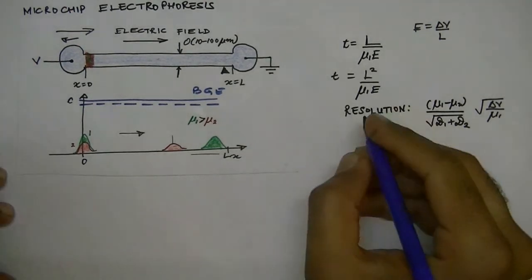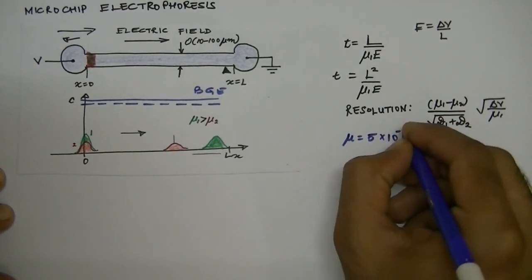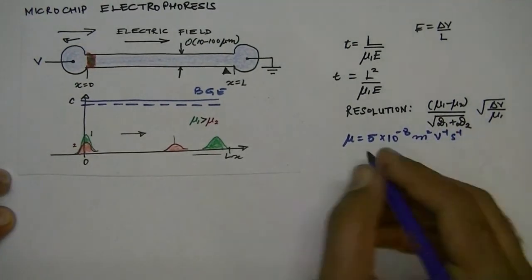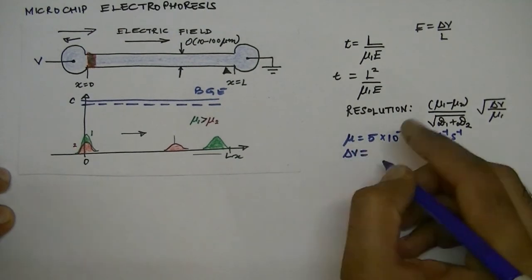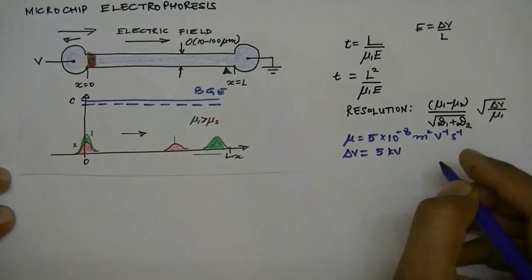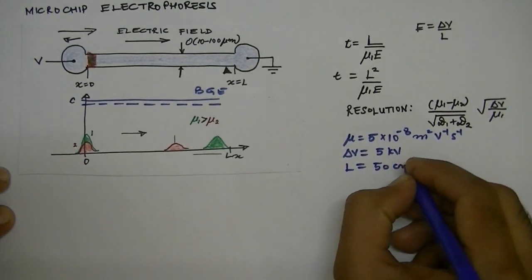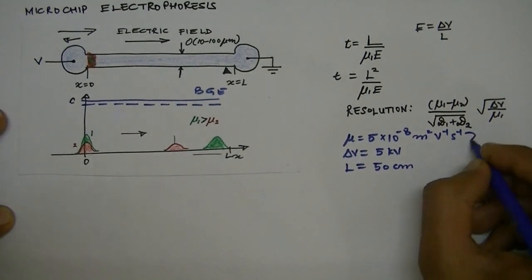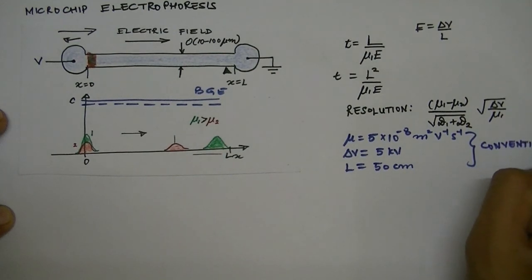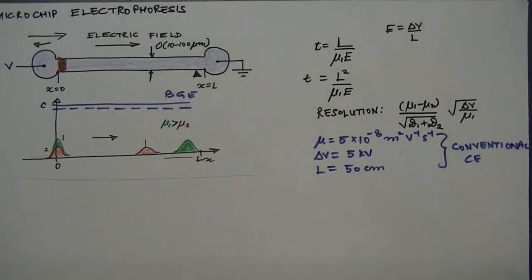To get an estimate of typical times involved: we take a typical mobility of 5×10⁻⁸ m² V⁻¹ s⁻¹, a voltage drop of about 5 kilovolts, and in conventional capillary electrophoresis systems the length is about half a meter to one meter.